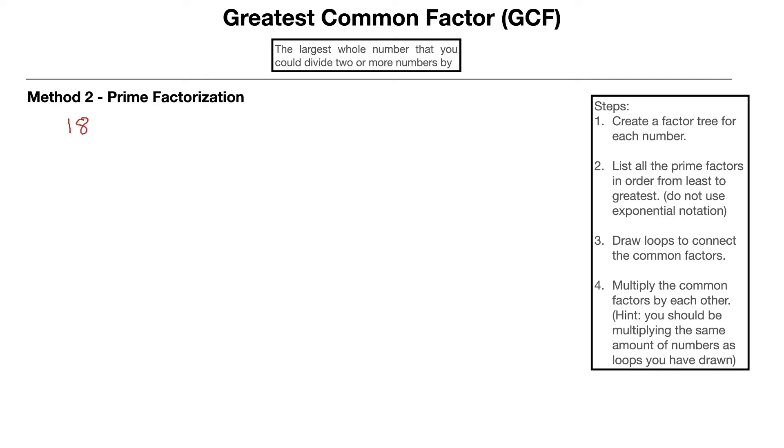So let's say we have the numbers 18 and 24, and you're asked to find what is the greatest common factor that those two numbers have. What we're going to do is follow step number one, it says create a factor tree for each number. To create a factor tree, what we're doing is we're going to split up a number into a pair of factors that give us that number. So for instance, we could say the numbers 3 and 6 when multiplied together would give us the number 18.